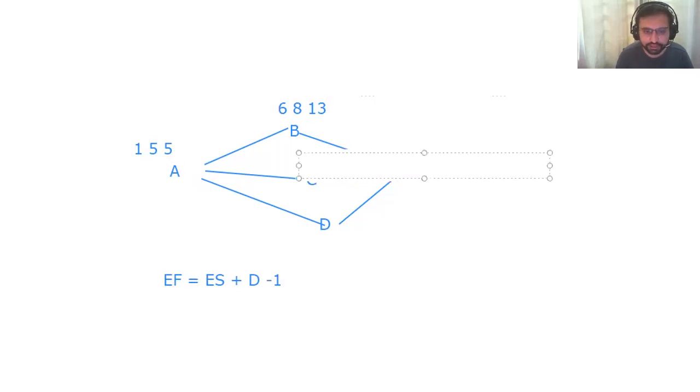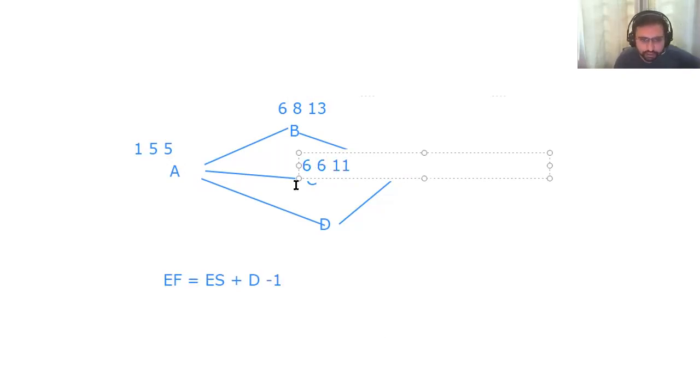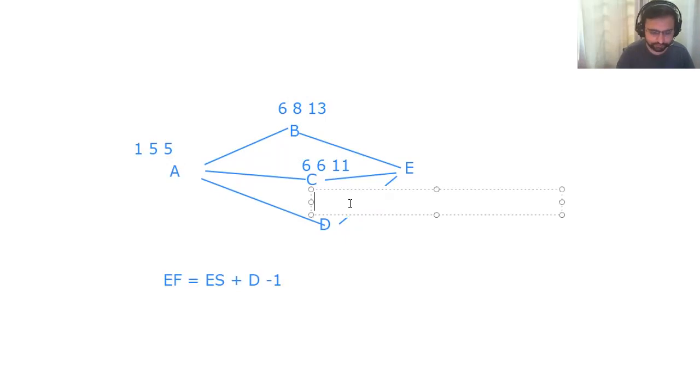The duration of C is six. Six plus six, 12 minus one, 11 maybe. Then the duration of D is seven. Six plus seven, 13 minus one, 12.